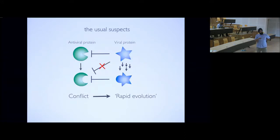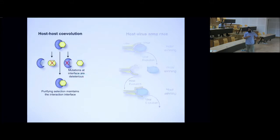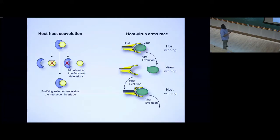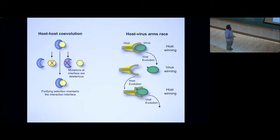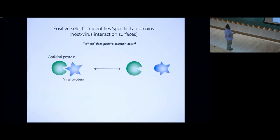We're going to switch gears now. I want to come back to this concept of using evolution as a guide to infer specificity domains. This is work done previously in my lab. The base premise of our thesis is that purifying selection maintains interaction interfaces where it's in the best interest of both parties to maintain the interaction, and positive selection constantly reshapes the interaction interface when it's in the interest of one party but not the other — that's a classic arms race.